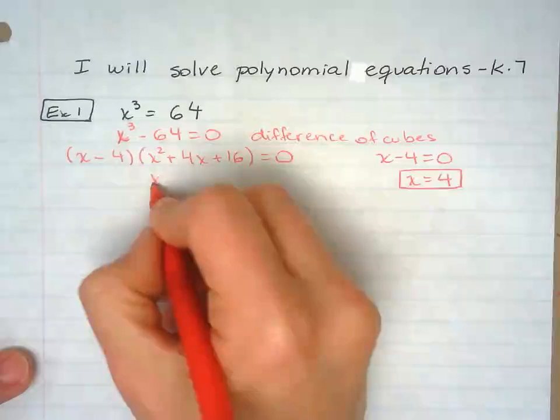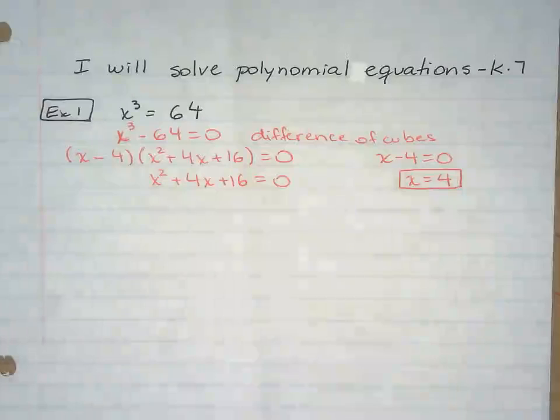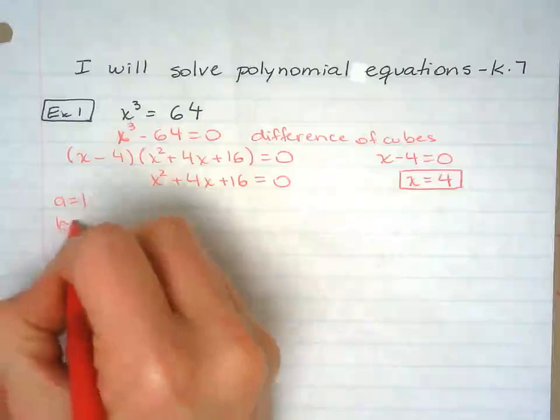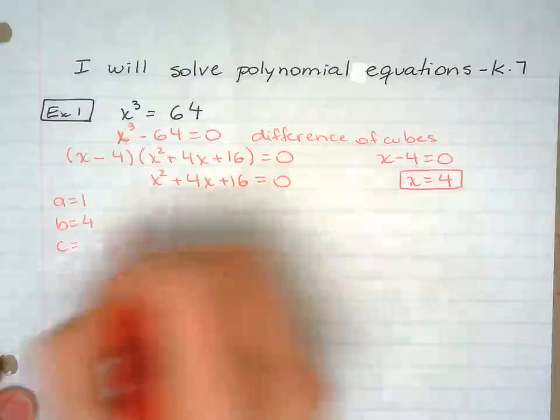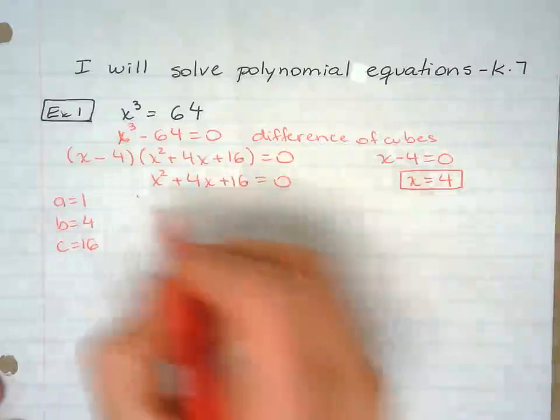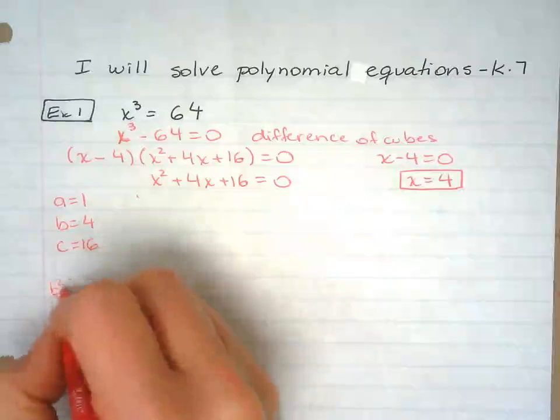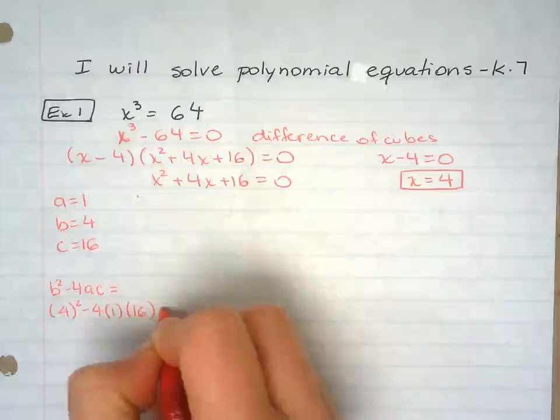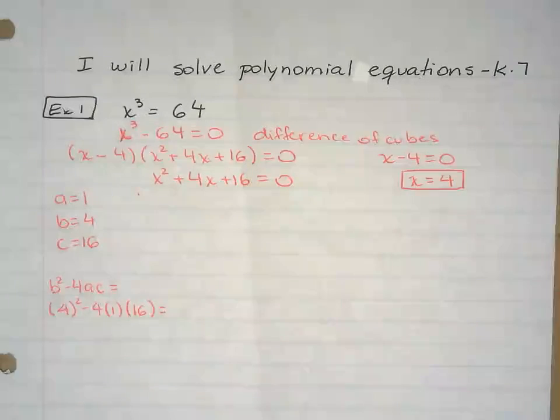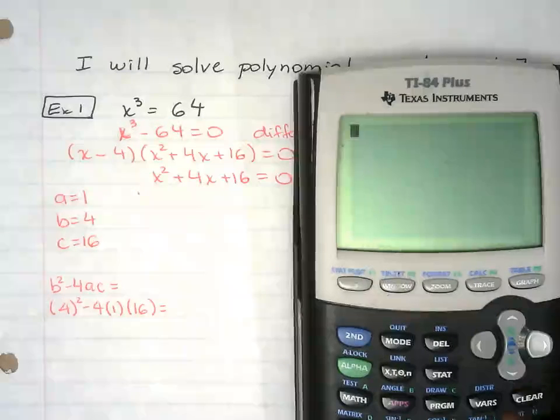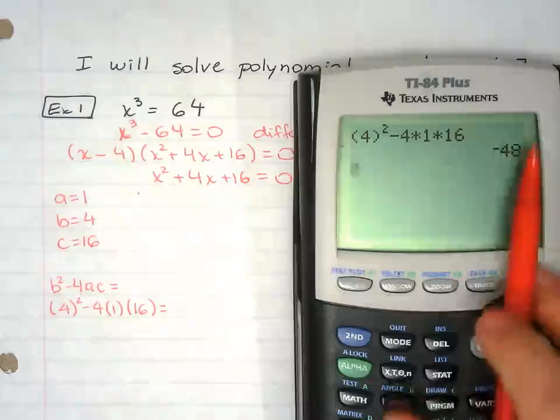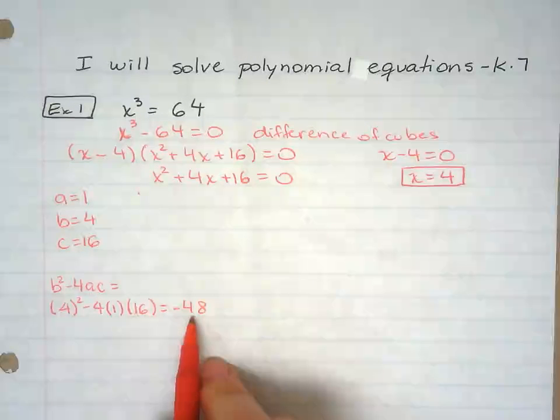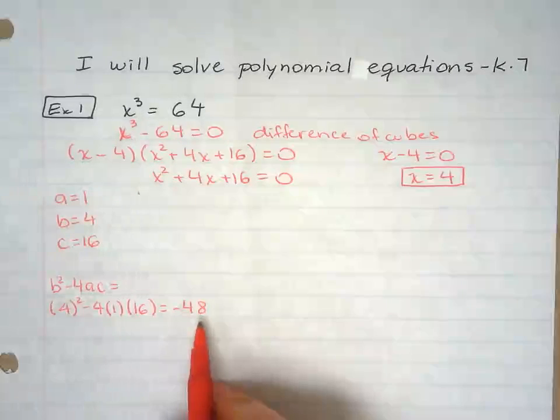Now this one, I'm going to set this one up equal to zero, and I know I can't factor, so I'm going to have to use the quadratic formula to solve this. So a is 1, b is 4, c is 16. I'm going to do b squared minus 4ac first. And I got negative 48. At this point, I know I'm going to have two imaginary solutions there, but we're going to worry about it when we get there.